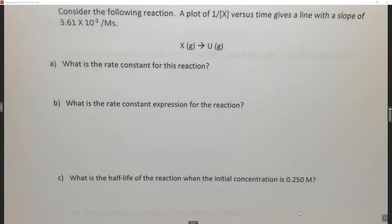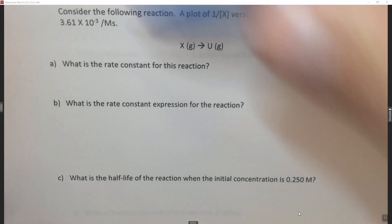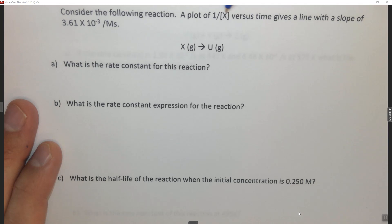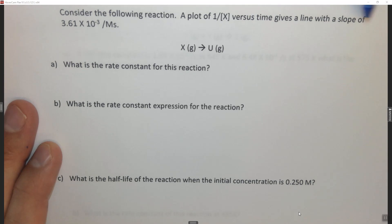So if you haven't already watched question 5, it's probably best to start with that one. It says consider the following reaction. A plot of 1/[X] versus time gives a line with a slope of 3.61 × 10⁻³ per molar second.